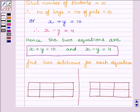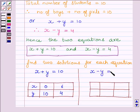Now, our first equation is x + y = 10. Two solutions for this equation are (0, 10) and (6, 4). Similarly, our second equation is x - y = 4. So two solutions for this equation are (0, -4) and (5, 1).